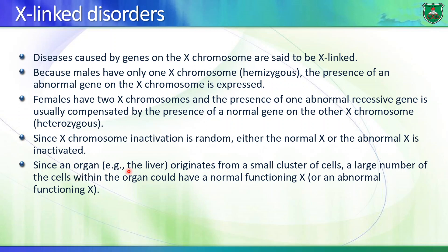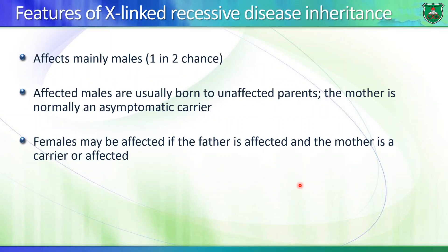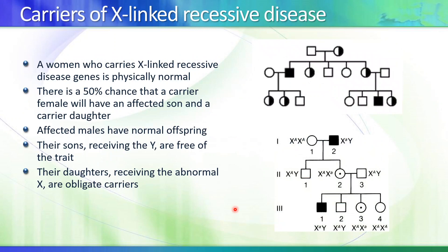Since an organ like the liver originates from a small cluster of cells, a large number of cells within the organ could have either a normal or abnormal functioning X chromosome. So a female might escape a disorder or might show it. With X-linked recessive disorders, they mainly affect males — affected males are usually born to unaffected parents. The mother is normally asymptomatic since it's recessive. A female may be affected if the father is affected and the mother is a carrier or affected. Pay attention to these pedigrees — I might give you a pedigree and ask you the pattern of inheritance.